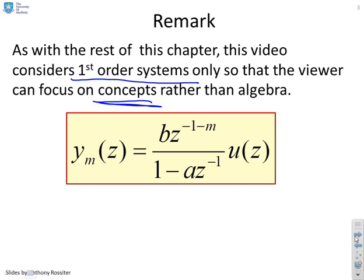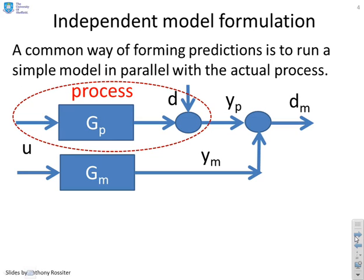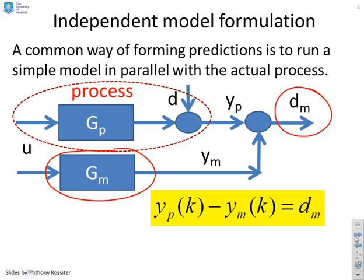Higher order systems will come later. This is just a reminder of our basic structure, where we have a process working in parallel with a system model. In this particular case, we're going to need the model and the bias term, unlike in the previous video, because we're going to have to form predictions explicitly. The bias term is given by the difference between the process output and the model output at the current sample.